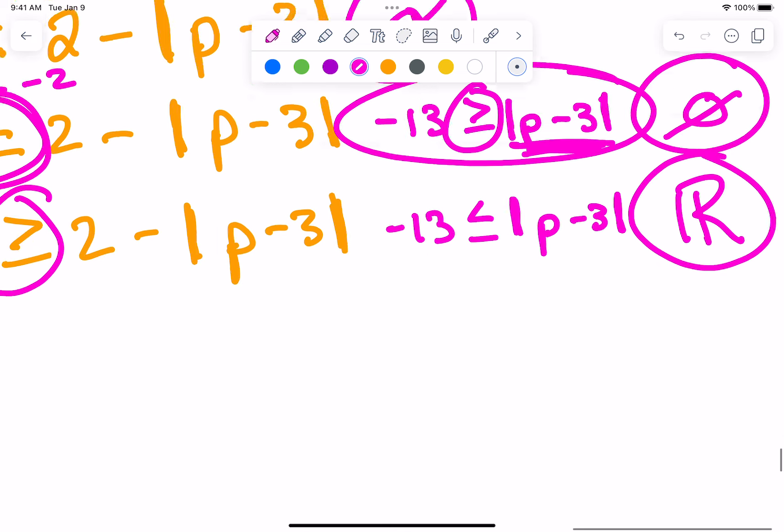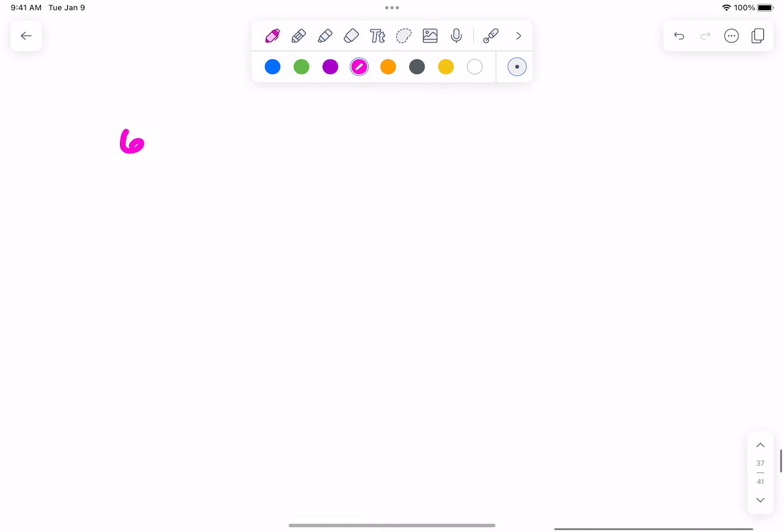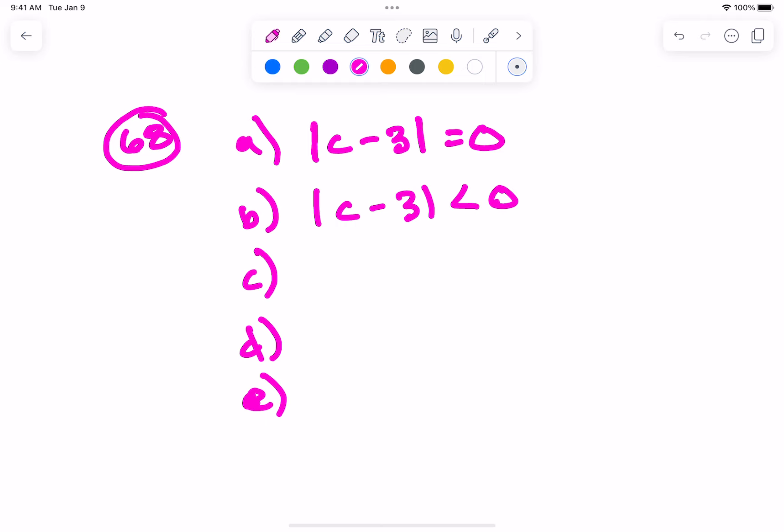What else? 68, A B C D E. These ones go fast though. Absolute value of C minus 3 equals zero, and then less than, less than or equal to, greater than, and greater than or equal to.